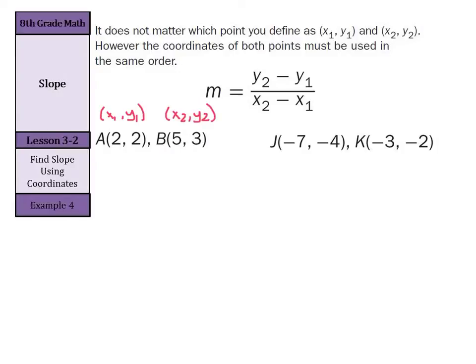It doesn't matter if it's your first slope problem or your millionth slope problem. Setting up which ordered pair is x1, y1 and which ordered pair is x2, y2 will make every single slope problem easier to solve. So we're going to use our formula m equals y2 minus y1 and divide it by x2 minus x1.